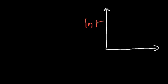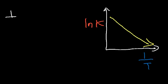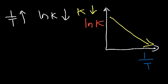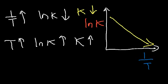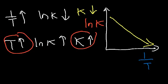If we graph this function, ln k goes on the y-axis and 1/T goes on the x-axis. The slope is negative, so we get a straight line going down. As 1/T increases, ln k decreases, which means k decreases. Conversely, if T increases — T is the reciprocal of 1/T — then ln k increases, which means k goes up. That's why we can say that as you increase the temperature, the rate constant k goes up and the rate of the reaction goes up.